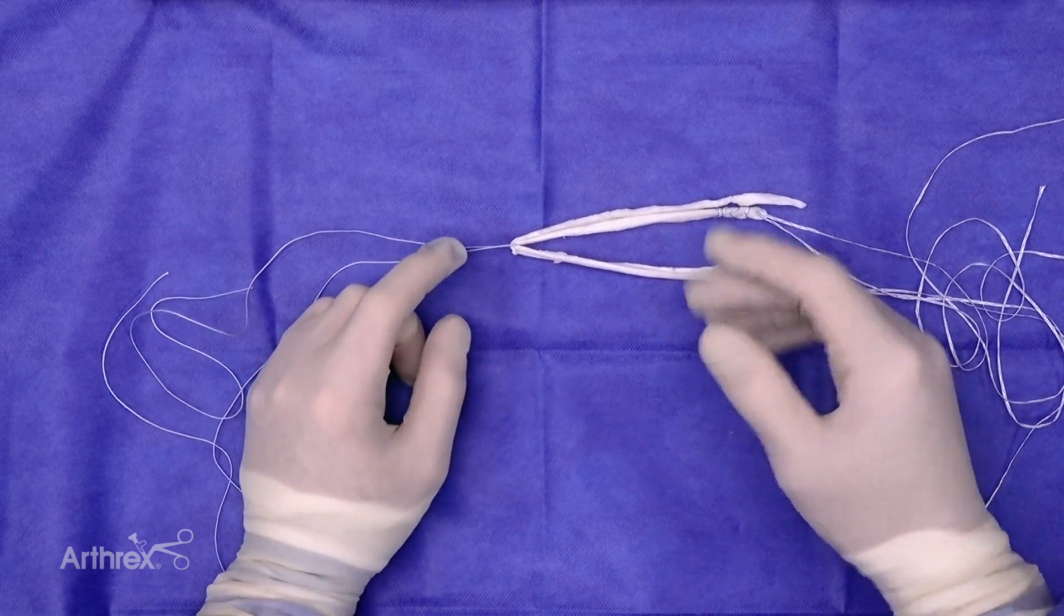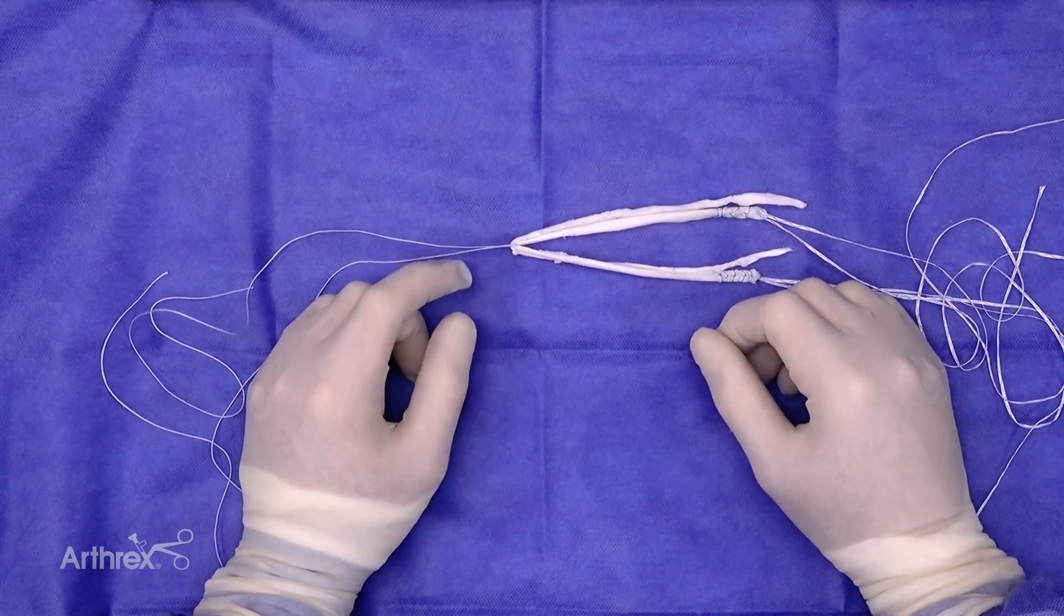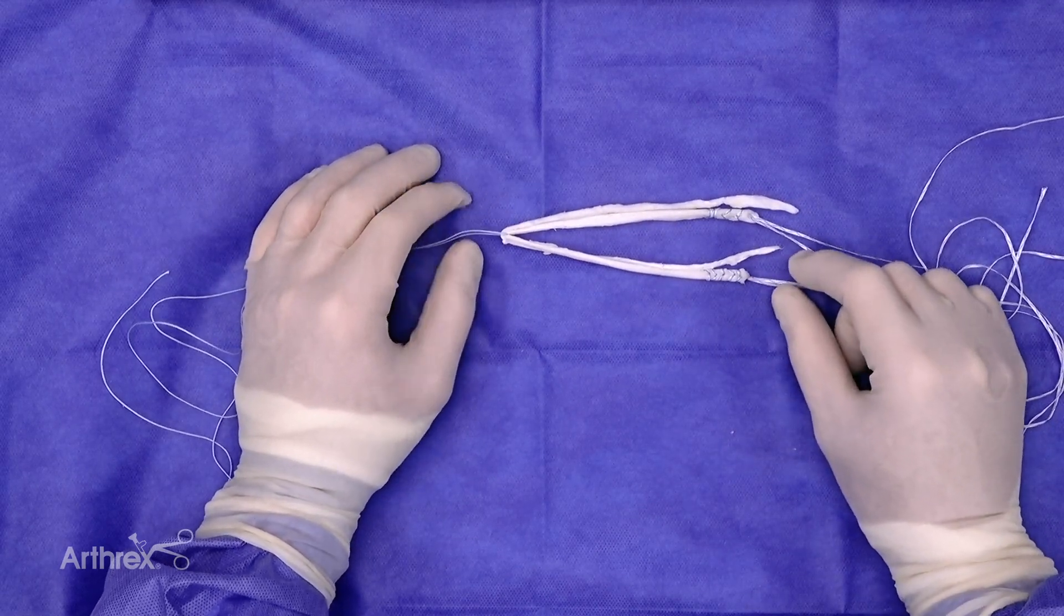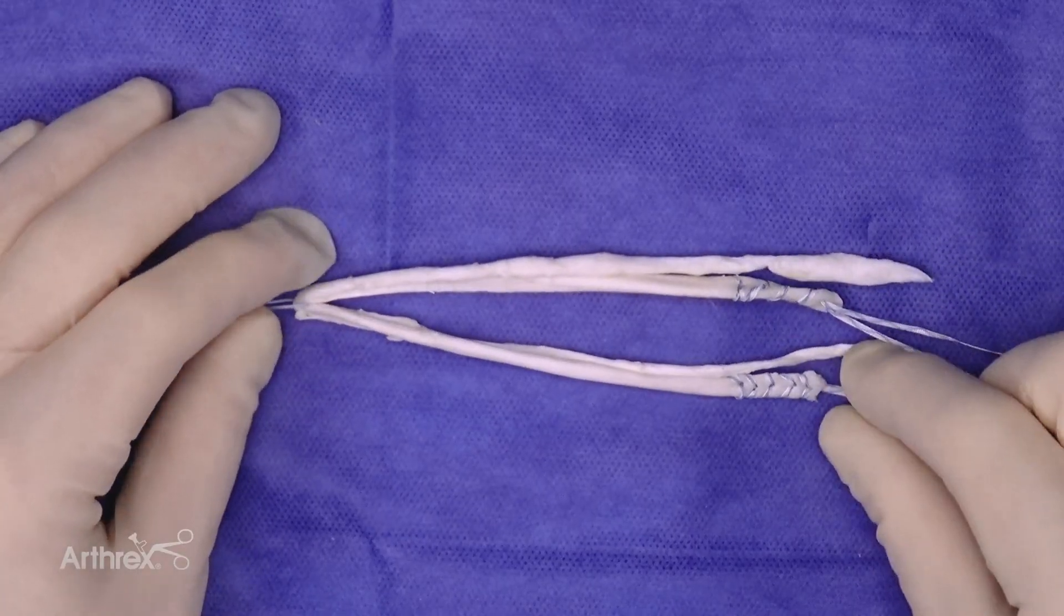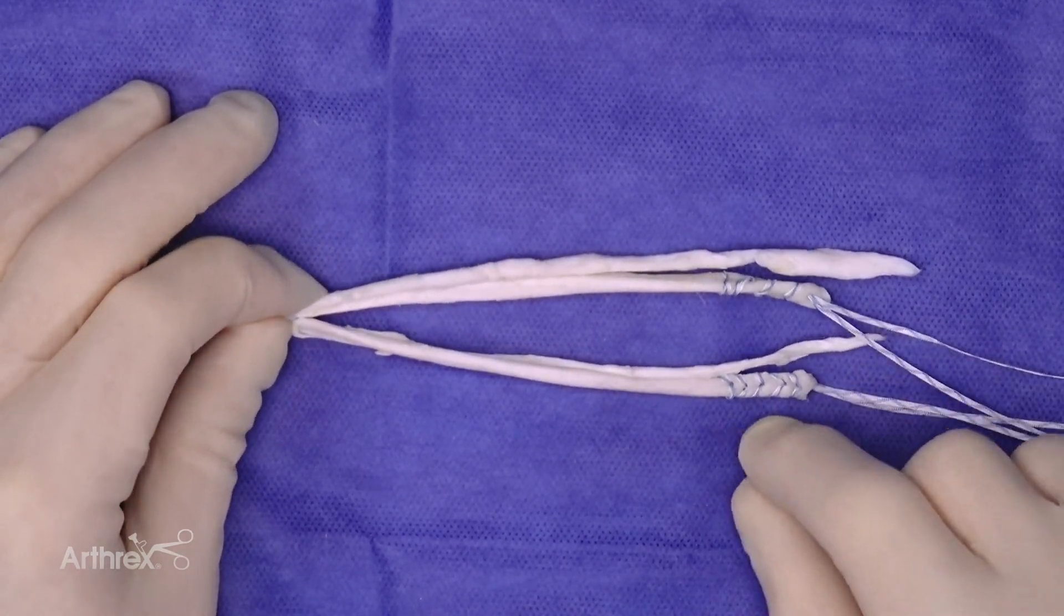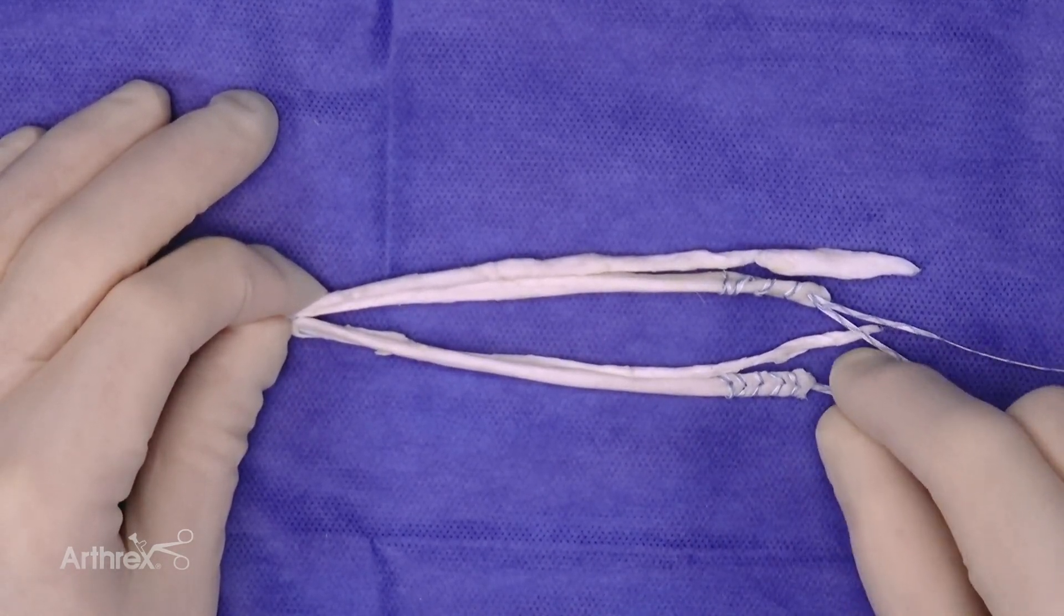Multiple studies, specifically out of the Moon Group, demonstrate higher re-rupture rates with a hybrid technique. Therefore, what we will demonstrate today is a very simple, secure way of producing a five-string graft using a simple hamstring autograft harvest and the fiber tag technique with the tightrope button.